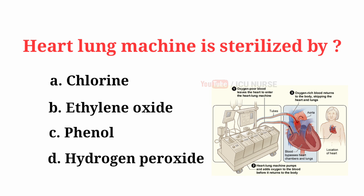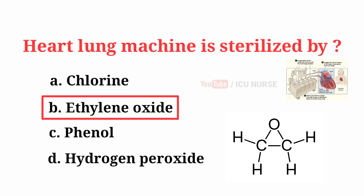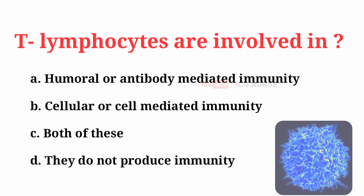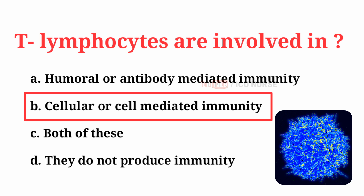Heart-lung machine is sterilized by... The correct answer is B, Ethylene oxide. A heart-lung machine temporarily takes over the function of the heart and lungs, especially during heart surgery. T-lymphocytes are involved in... The correct answer is B, Cellular or cell-mediated immunity.